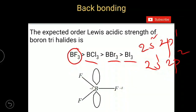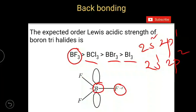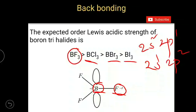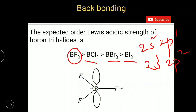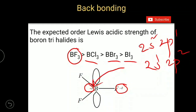Boron atom is bonded to fluorine, which is highly electronegative. The electronegativity difference between boron and fluorine is maximum compared to the combination of boron and other halogens. Because of this, fluorine gets a partial negative charge and boron gets a partial positive charge. So as boron has a positive charge, its ability to accept an electron pair is greater than in other boron trihalides. Therefore, boron trifluoride should be the stronger Lewis acid than other boron trihalides.